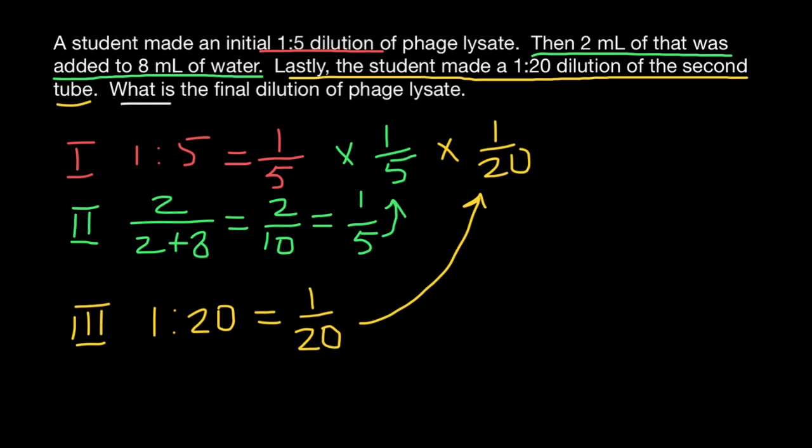And the final dilution of the phage is going to be 1 over 500. So we diluted our initial solution 500 fold in 3 consecutive dilutions.